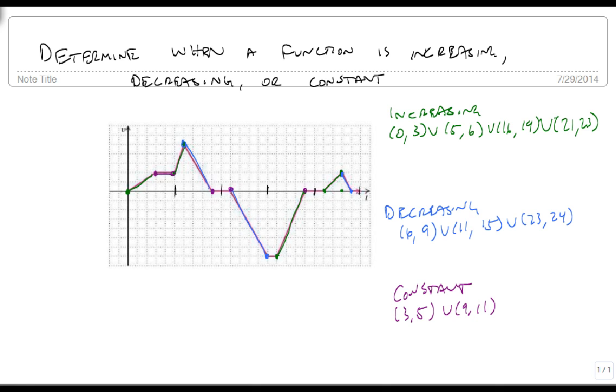And from 19 to 21, and notice we've got this spot right here are 24 to infinity because that arrow means that this just keeps going.